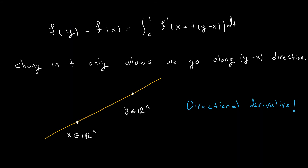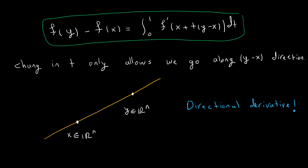As I explained, we have this equality and need to handle f' of (x + t(y−x)). We only move along the direction passing from x to y — only on this line. This is exactly the meaning of a directional derivative: we take one direction, and along that direction, we take the derivative of the function. Fortunately, we have a formula for that directional derivative.